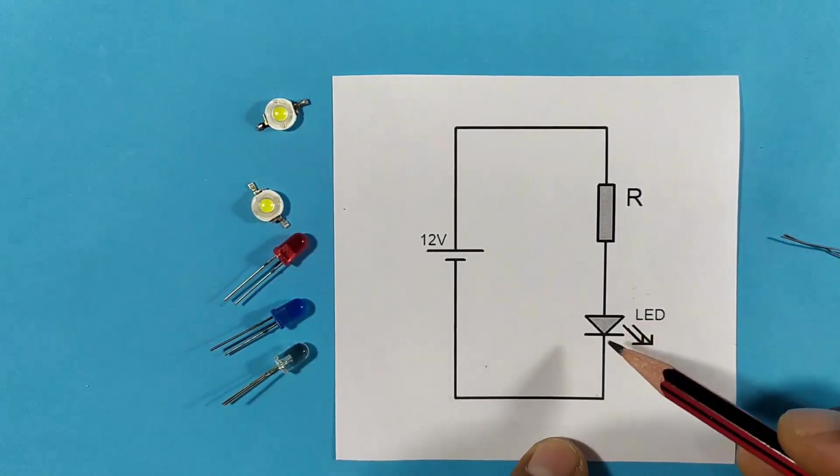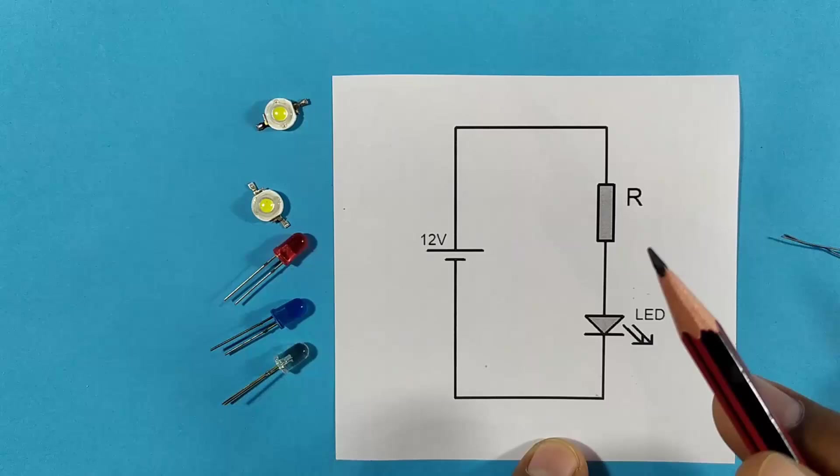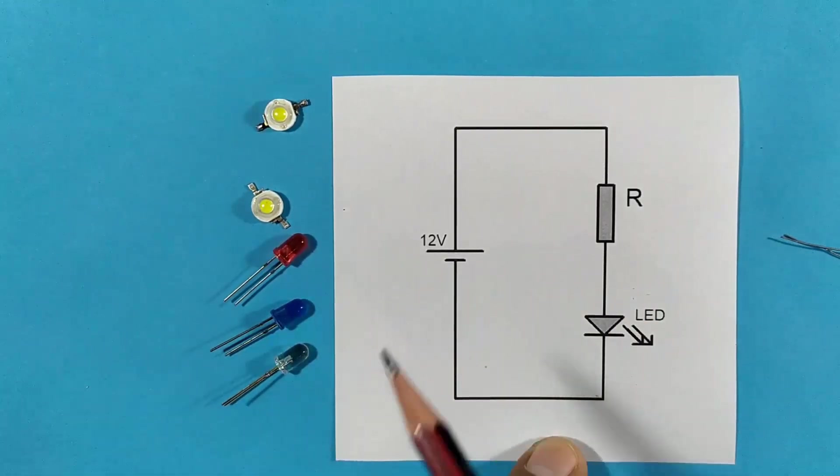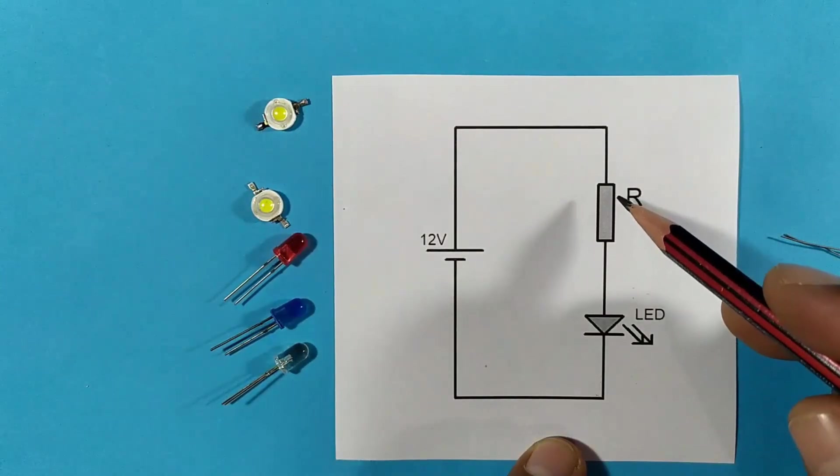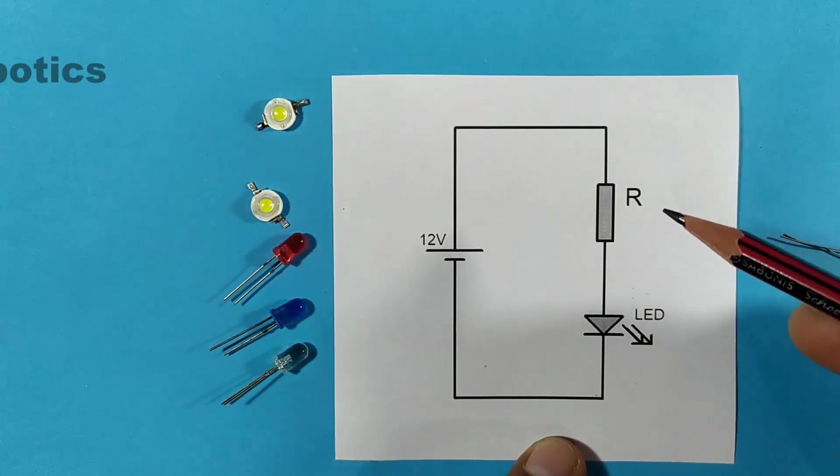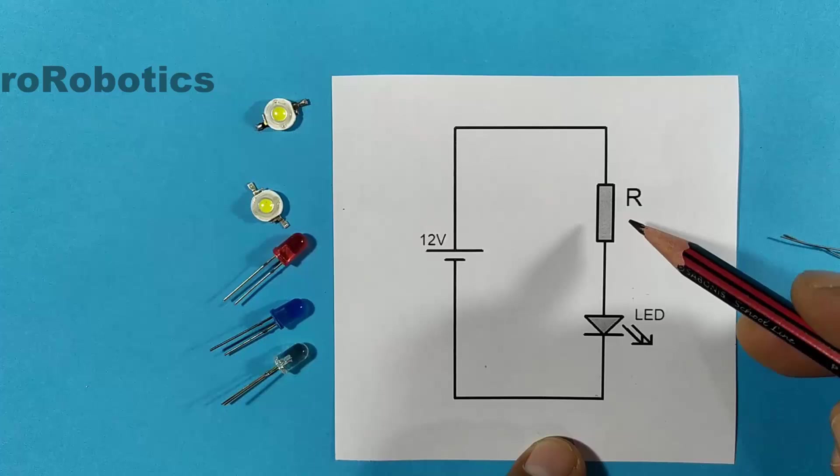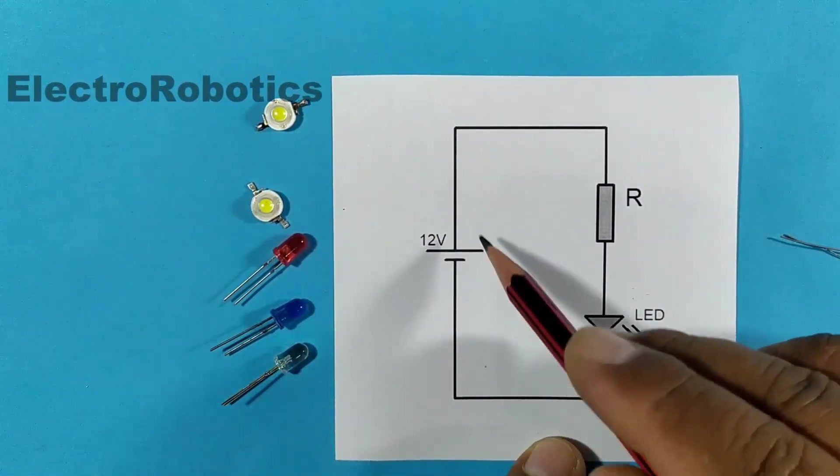As we saw a moment ago with an LED, these cannot be connected directly to the power supply. And if you connect it with a resistor, then you have to choose the appropriate value based on the voltage that is being applied.